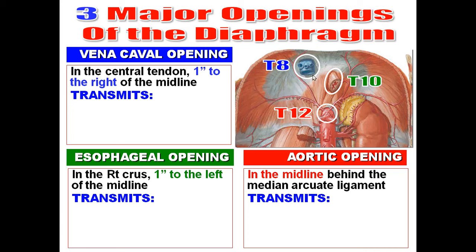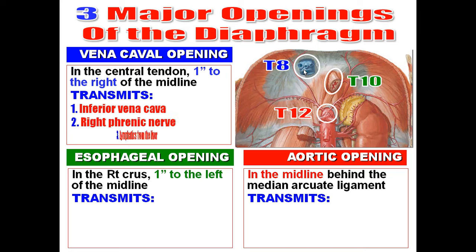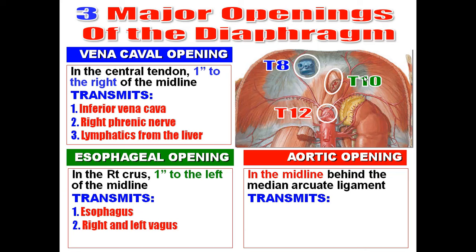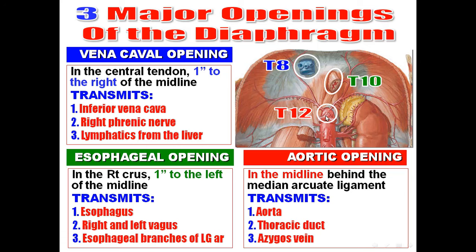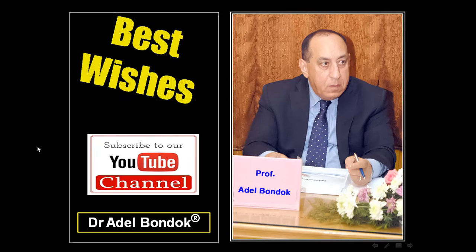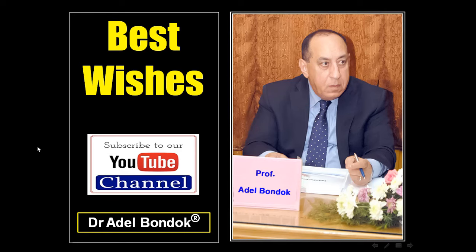Each foramen transmits three structures. The vena cava opening transmits: the inferior vena cava, the right phrenic nerve, and lymphatics from the liver to the mediastinal lymph nodes. The esophageal opening transmits: the esophagus, the right and left vagus nerves (called the anterior and posterior gastric nerves), and a branch from the left gastric artery to supply the esophagus. The aortic opening transmits: the aorta, the thoracic duct, and the azygos vein. Thank you very much, good luck, and best wishes.